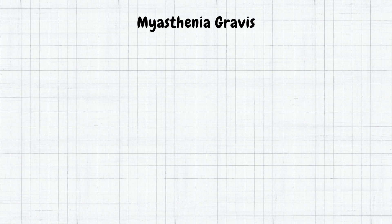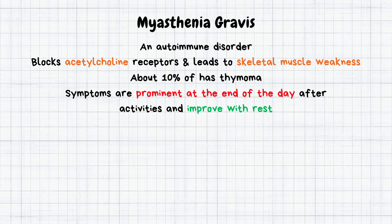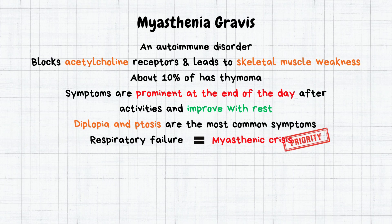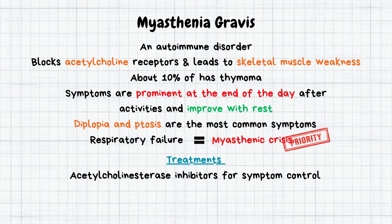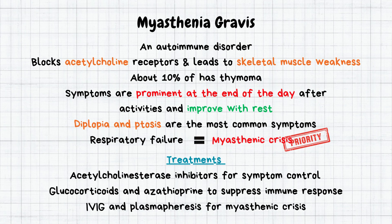In summary, MG is an autoimmune disorder in which the immune system generates antibodies that attach to acetylcholine receptor sites, making them insensitive to acetylcholine, blocking neuromuscular transmission, and leading to muscle weakness. About 10% of patients have thymoma. Symptoms worsen with activity and improve with rest, and are most prominent at end of day. Eye muscle weakness causing diplopia and ptosis are the most common symptoms. Myasthenic crisis causing respiratory failure is a medical emergency. Treatments include acetylcholinesterase inhibitors for symptom control, glucocorticoids and azathioprine to suppress immune response, and IVIG and plasmapheresis.